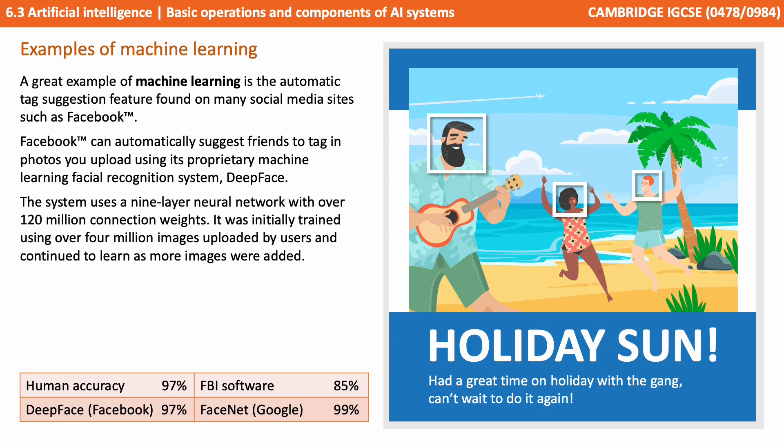It has been recorded that the human accuracy of facial recognition is around 97%, and Facebook's DeepFace achieved the same rating. The FBI's facial recognition software has an accuracy of 85%, whereas FaceNet developed by Google has a 99% success rate. This has led to a series of moral and ethical questions about social media sites storing these images in order to compare and learn from.